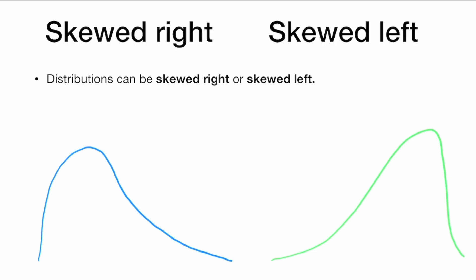Distributions can be skewed to the right or skewed to the left, and sometimes people find these hard to remember. So we're going to learn a little trick. These are also called positively skewed and negatively skewed, but we're going to use the terms skewed right and skewed left.